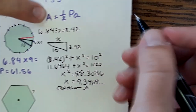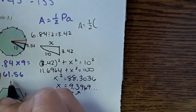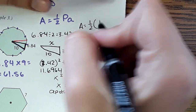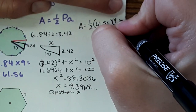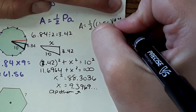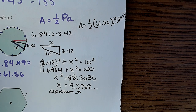Now we can use that in the equation. Area equals one half times the perimeter of 61.56 times the apothem of 9.397. And the most satisfying thing is when you do all this calculating and then check the answer key and it's there.